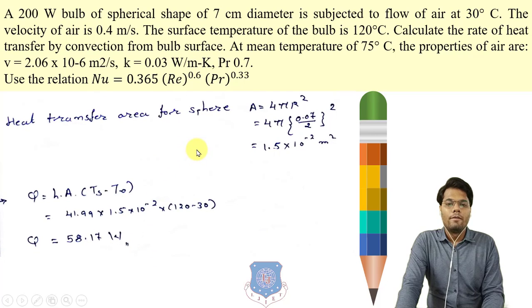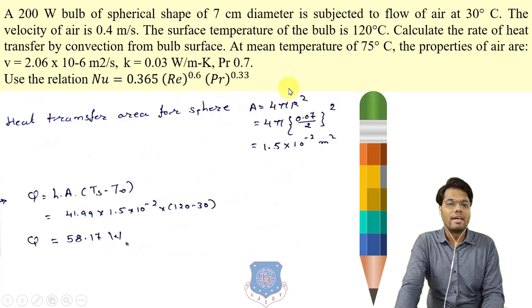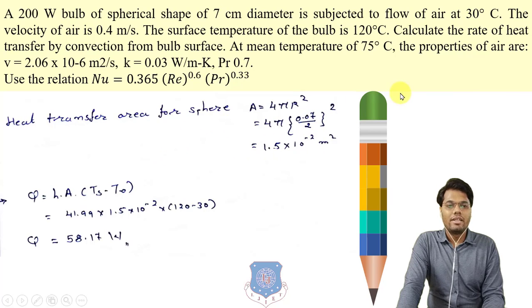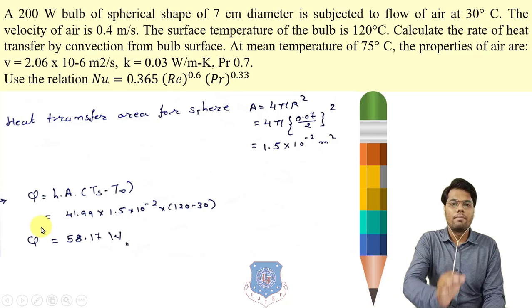Now, surface area for a spherical shape is 4πr² = 4π × (0.07/2)² = 1.5 × 10⁻² m². The convective heat transfer rate is Q = h·A·ΔT = 41.99 × (1.5 × 10⁻²) × (120 − 30) = 58.17 W.